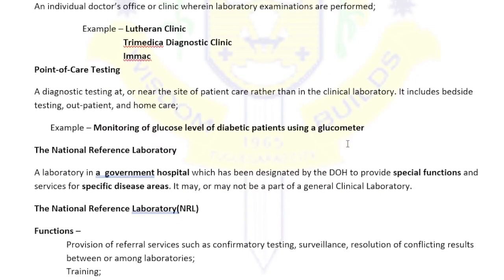Point-of-care testing is done at the patient's bedside using small automated equipment, like a glucometer for measuring glucose levels. An example is monitoring the glucose of a diabetic patient using a glucometer.